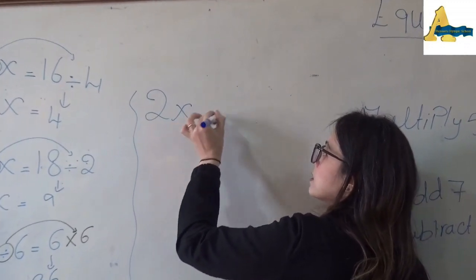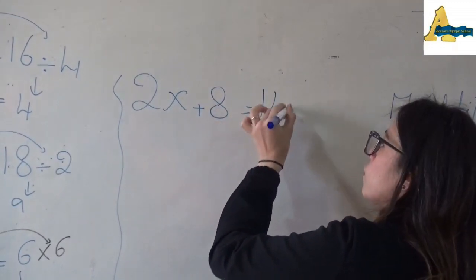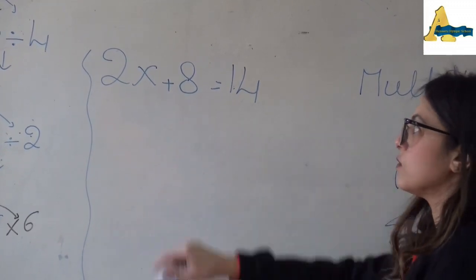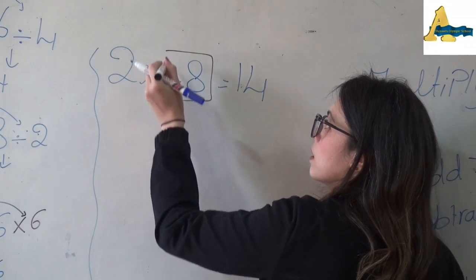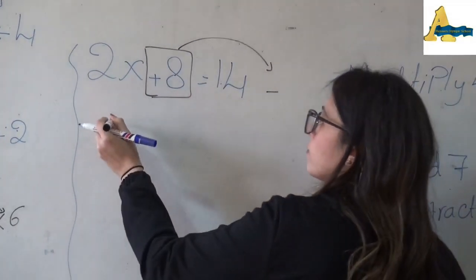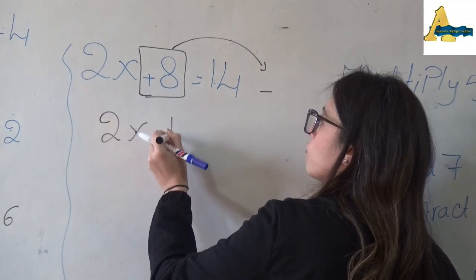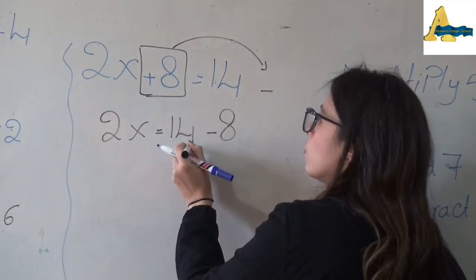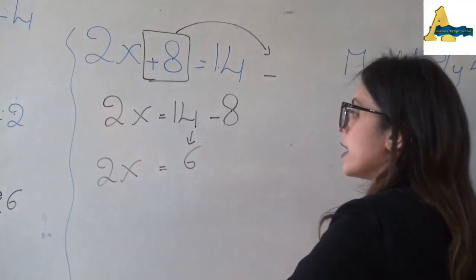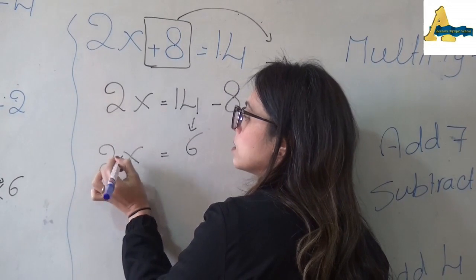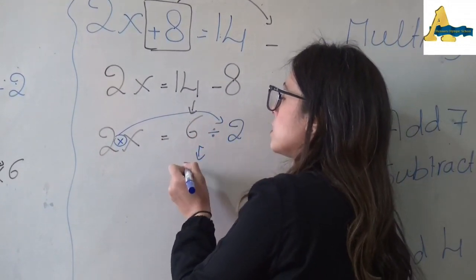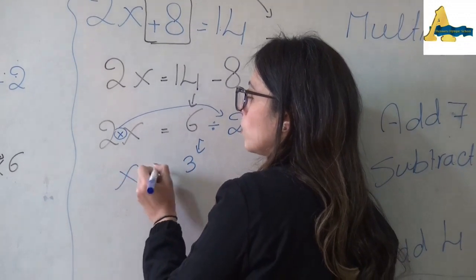If I have 2x + 8 = 14: which part do I start with? I start with the number without x. First, plus 8 will go to the other side as minus 8. So 2x = 14 - 8 = 6, meaning 2x = 6. Now the hidden sign between 2 and x is times, which goes to the other side as divided. 6 divided by 2 = 3, that means x = 3.